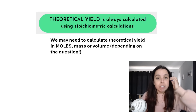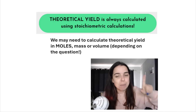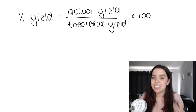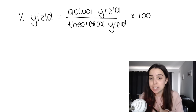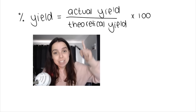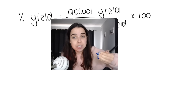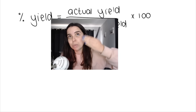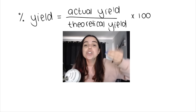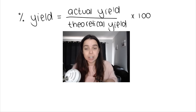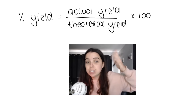We may need to calculate theoretical yield in moles, mass, or volume — it just depends on the question. We need theoretical yield in order to calculate percentage yield, which I will cover in another video in this playlist. Percentage yield takes your actual yield — what actually happened in the lab — divided by the theoretical yield, which is what was calculated and should have been produced according to the stoichiometry and mole ratios, and we multiply by 100 to get a percentage.